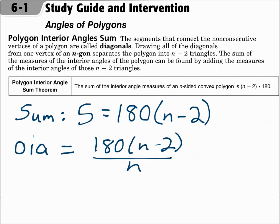This is lesson 6.1, Angles of Polygons. Your objectives are to find and use the sum of the measures of the interior angles of a polygon, and find and use the sum of the measures of the exterior angles of a polygon.